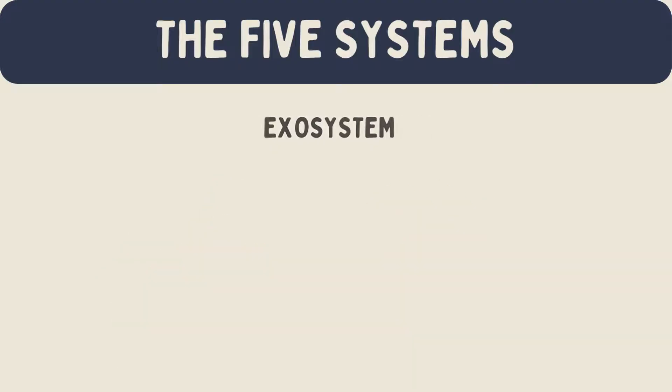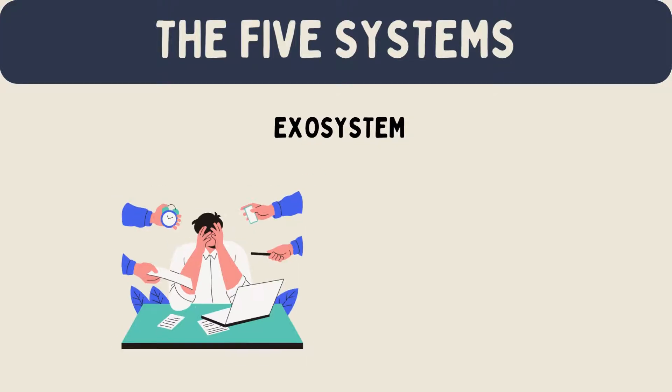The exosystem includes settings that do not directly involve the person, but still affect them. For example, a parent's workplace is part of the exosystem.